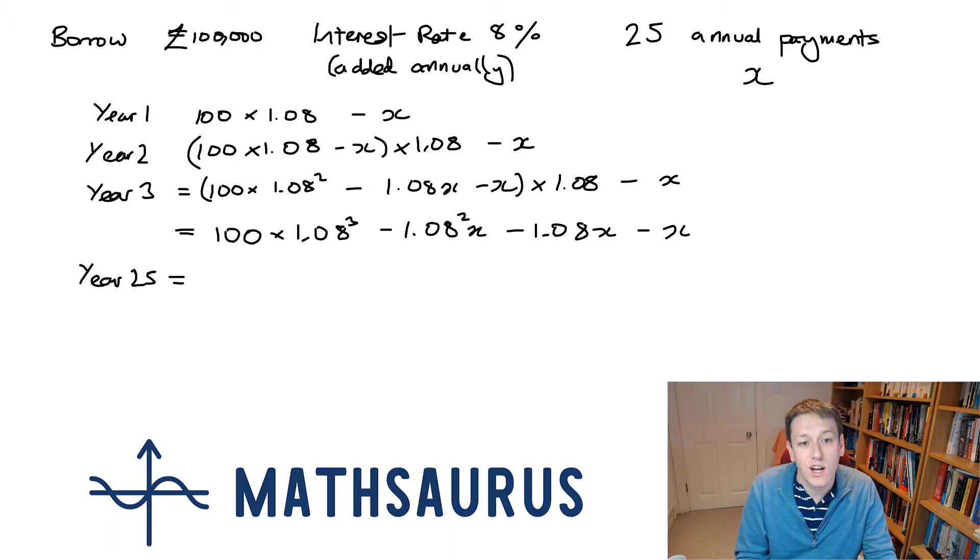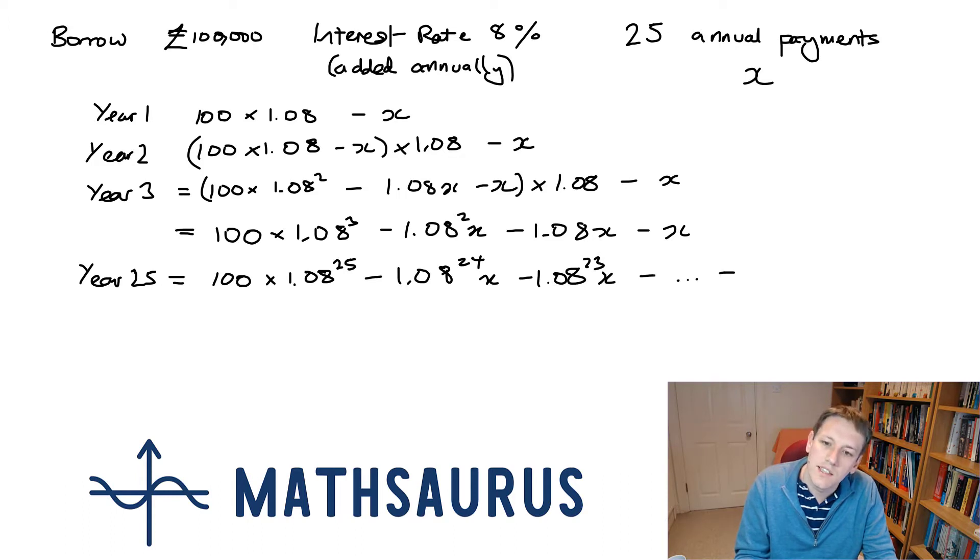So you can convince yourself that at the end of year 25, if you keep applying this procedure, we'll have 100 times 1.08 to the 25 minus 1.08 to the 24 times x minus 1.08 to the 23 times x. At the end here, I'll have 1.08 squared times x minus 1.08 times x and finally minus x for the final repayment.